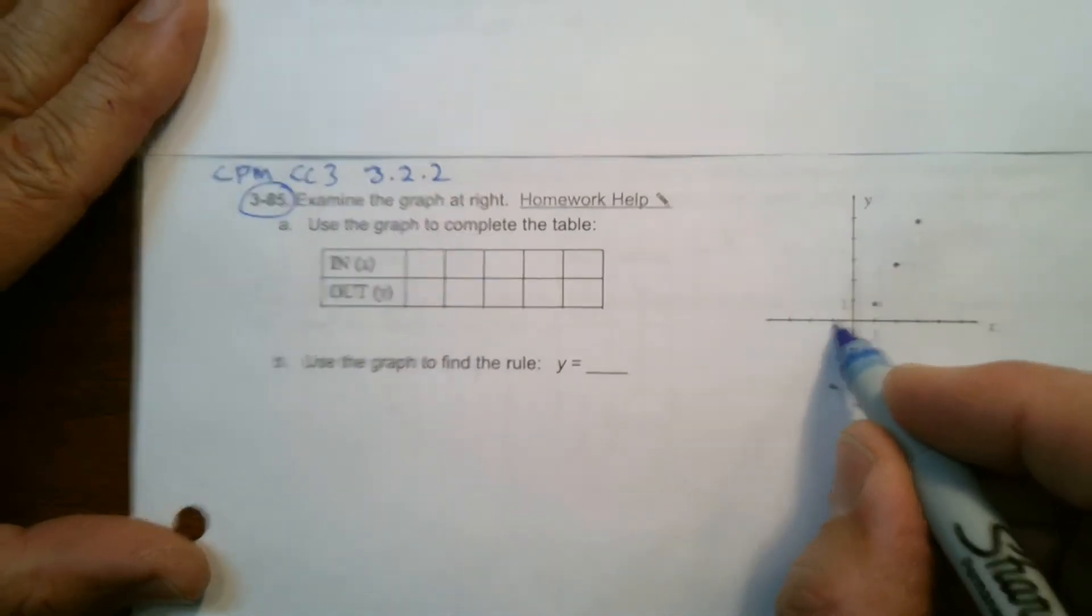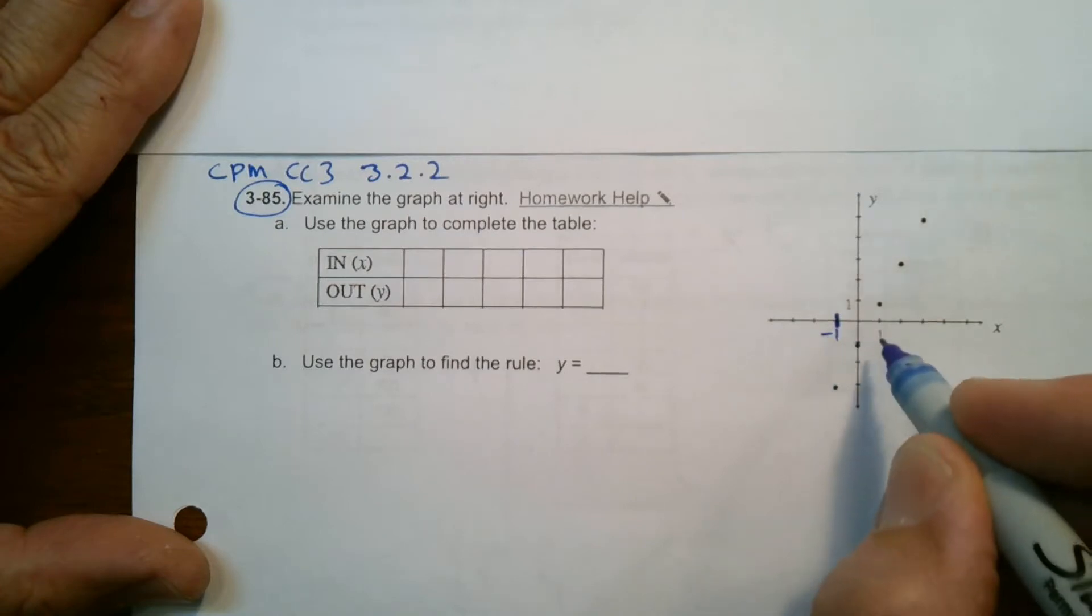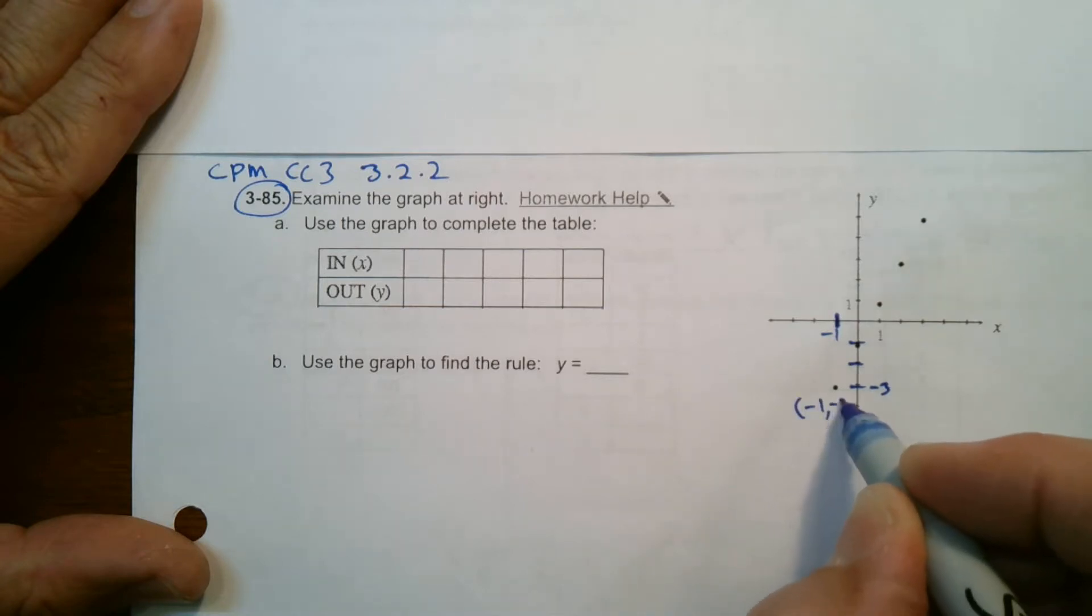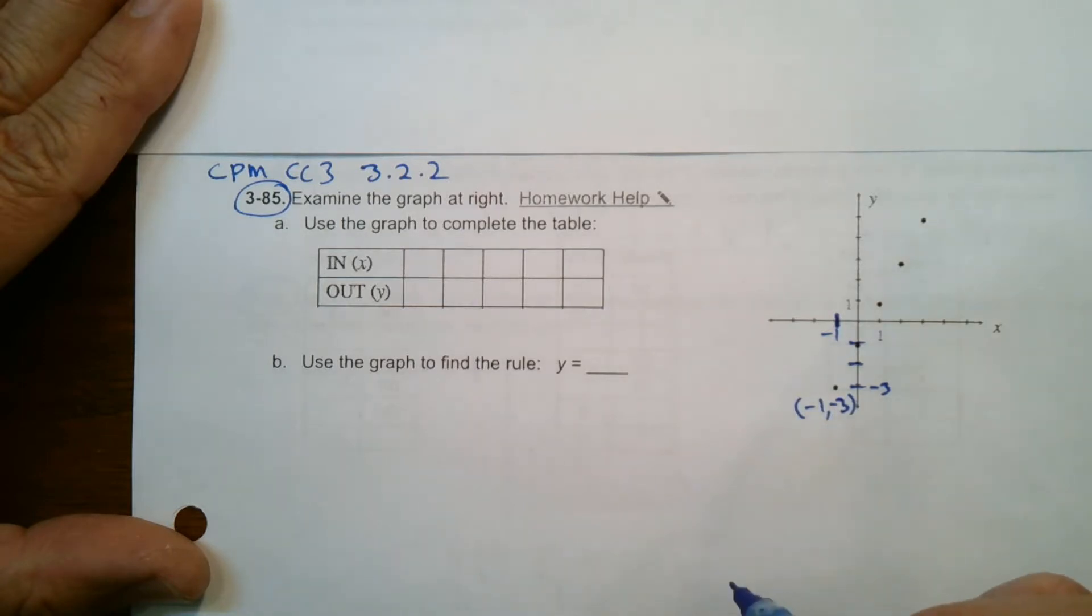So I can see this one right here. That's at negative 1. And then if I work my way down, negative 1, negative 2, negative 3, that's at negative 1. So this is at negative 1, negative 3. That's where that point is.